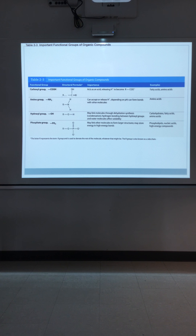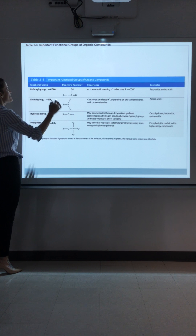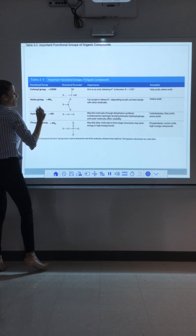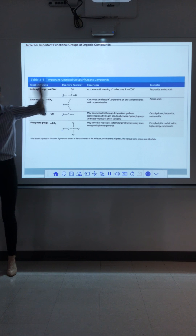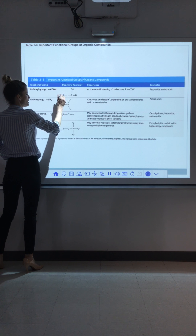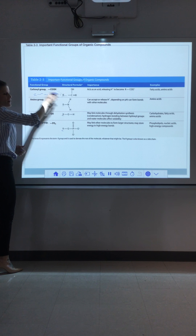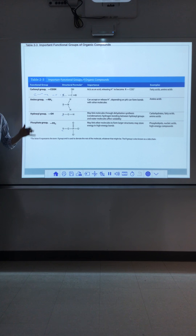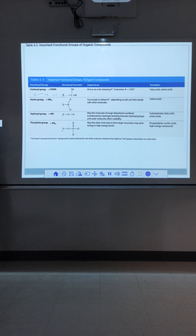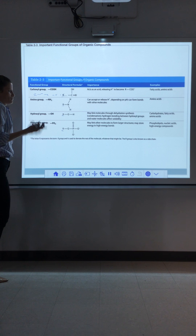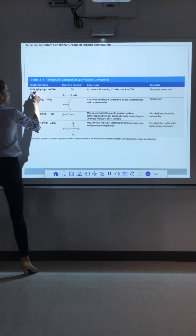We have what we call functional groups attached to the carbon backbone. You'll have this big long chain of carbon and hydrogen, and then you'll have something like a carboxyl group, also called carboxylic acid. Whatever this functional group is, it's what determines how the compound behaves. As we look at carbohydrates, proteins, or lipids, we'll see certain key groups that make them stand out and determine what that molecule or compound is actually going to do.